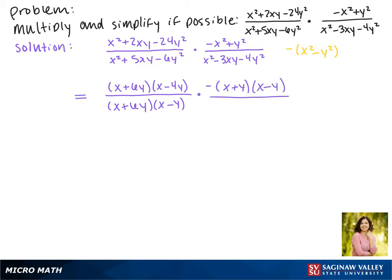In the denominator here we have negative 4. The factors of negative 4 that make negative 3 are negative 4, so we say x minus 4y, and positive 1, so we say x plus y.